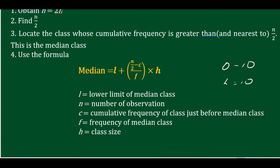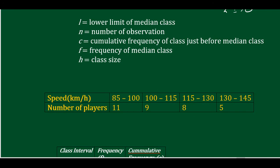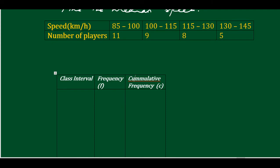Example: find the median speed. The speed ranges from 85 to 100 km per hour, up to 100 to 159. The question is: find the median speed. The class intervals are: 85 to 100, 100 to 115.